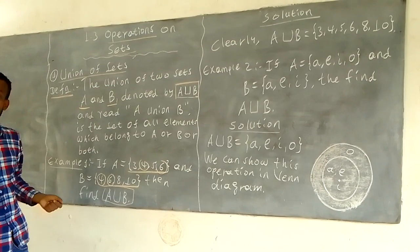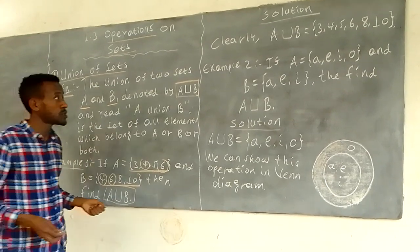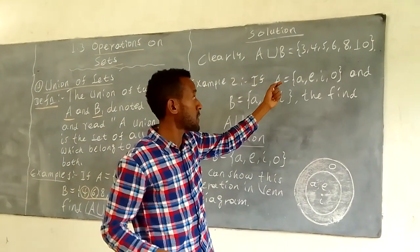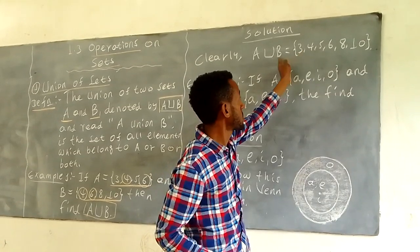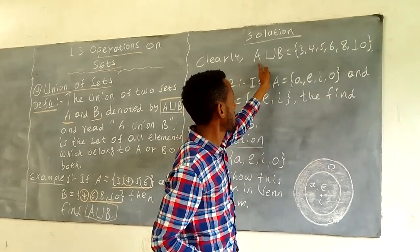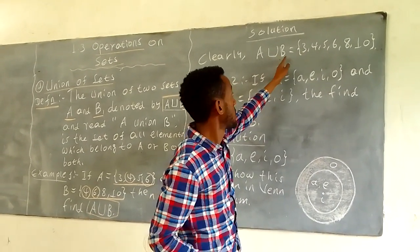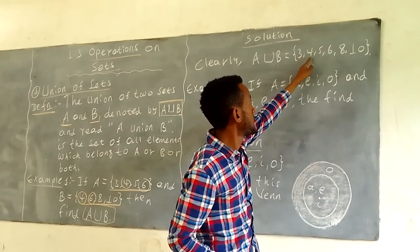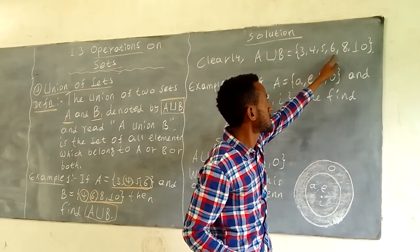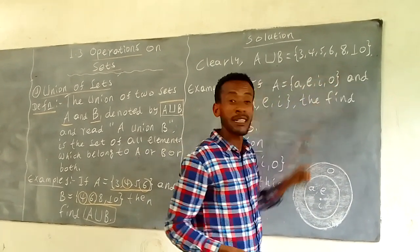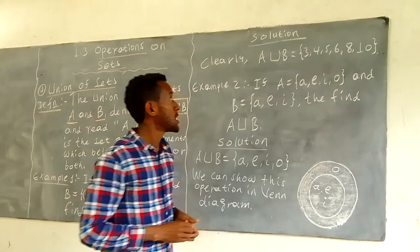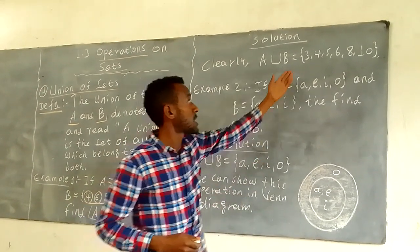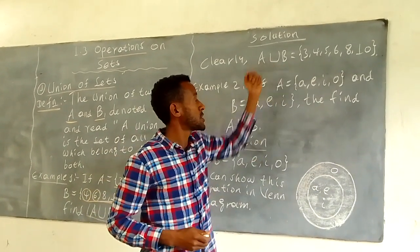A union B is equal to {3, 4, 5, 6, 8, 10}. If A union B equals each other, this is the result.